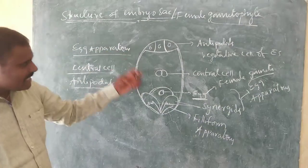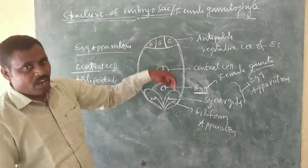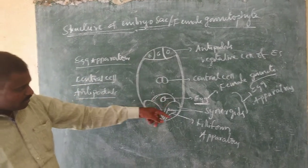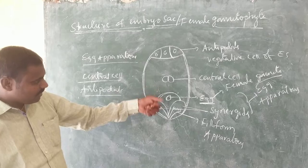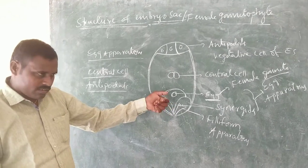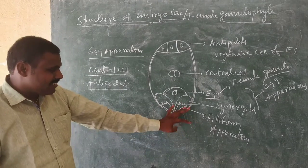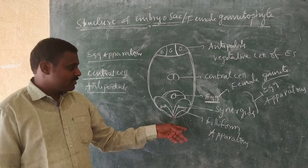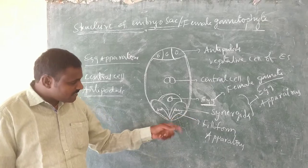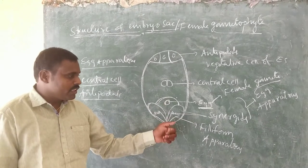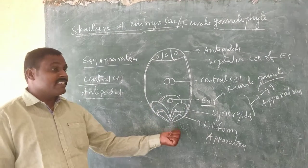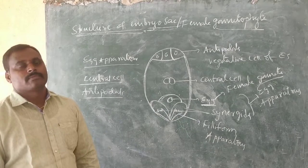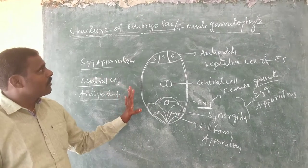After fertilization, the egg cell develops into a zygote. Regarding the synergids: one synergid degenerates during the entry of the pollen tube into the embryo sac, and the other synergid degenerates after the entry of the pollen tube. A typical angiospermic embryo sac contains seven cells and eight nuclei.